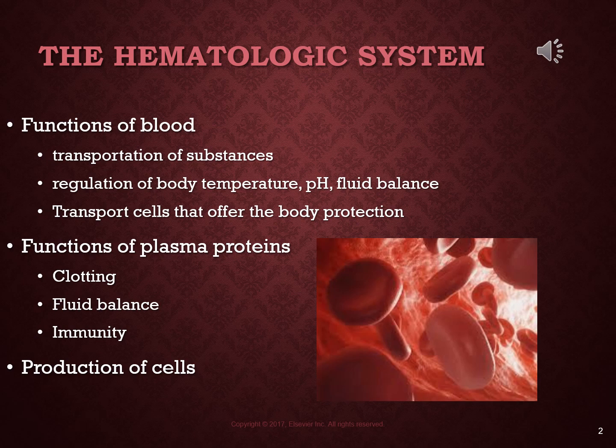These proteins are synthesized by the liver and are responsible for many important functions in our body. First is clotting — all of the clotting factors are considered plasma proteins. Second is fluid balance, with the most important protein being albumin. And third is immunity — our immunoglobulins are plasma proteins.